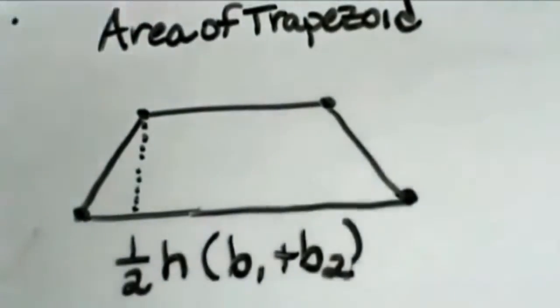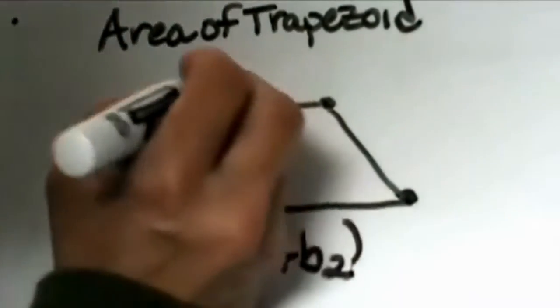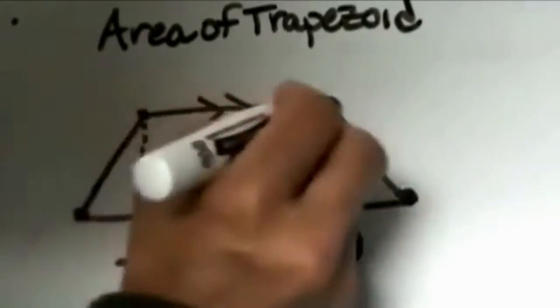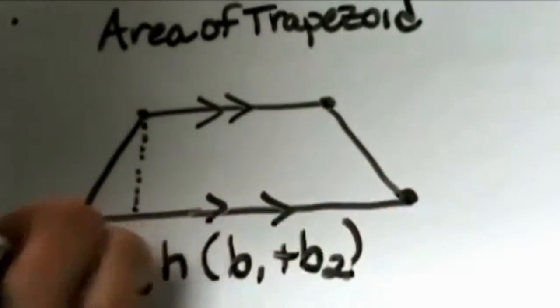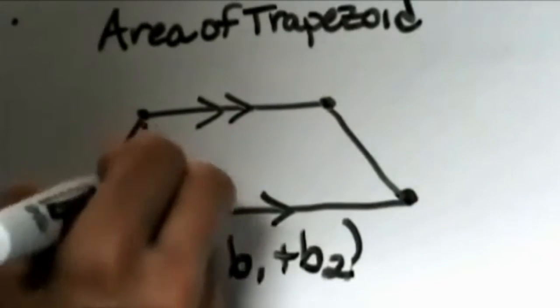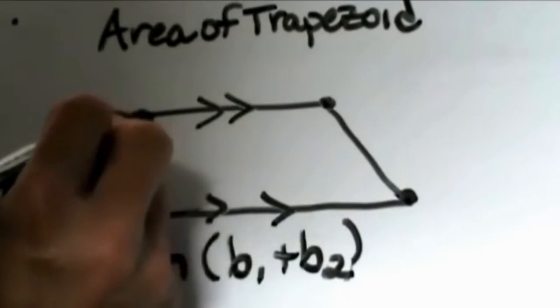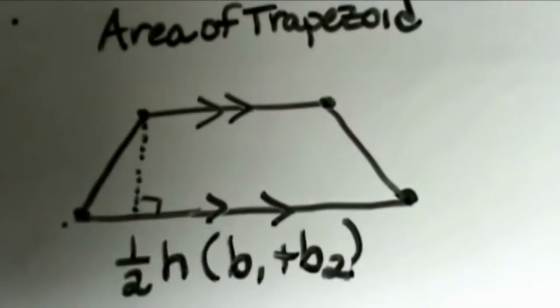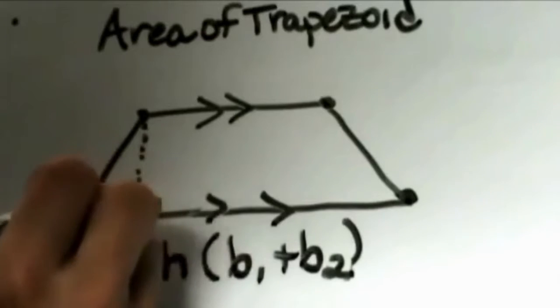I've drawn here a trapezoid. A trapezoid has two parallel bases, so this top base and this bottom base are parallel to each other. If I drop from the top vertex straight down an altitude that forms a right angle, I've got a triangle over here.